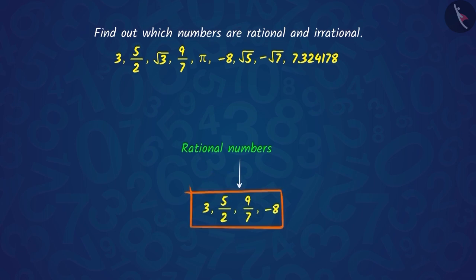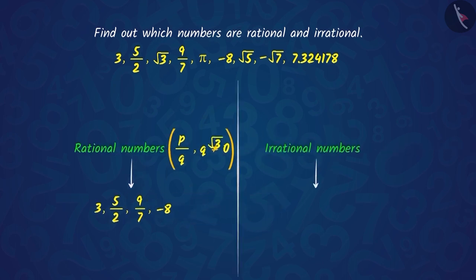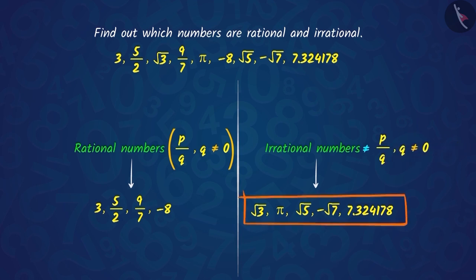Well done! The numbers in the first column are rational because they can be written as P over Q. And the numbers in the second column are irrational because they cannot be written as P over Q.